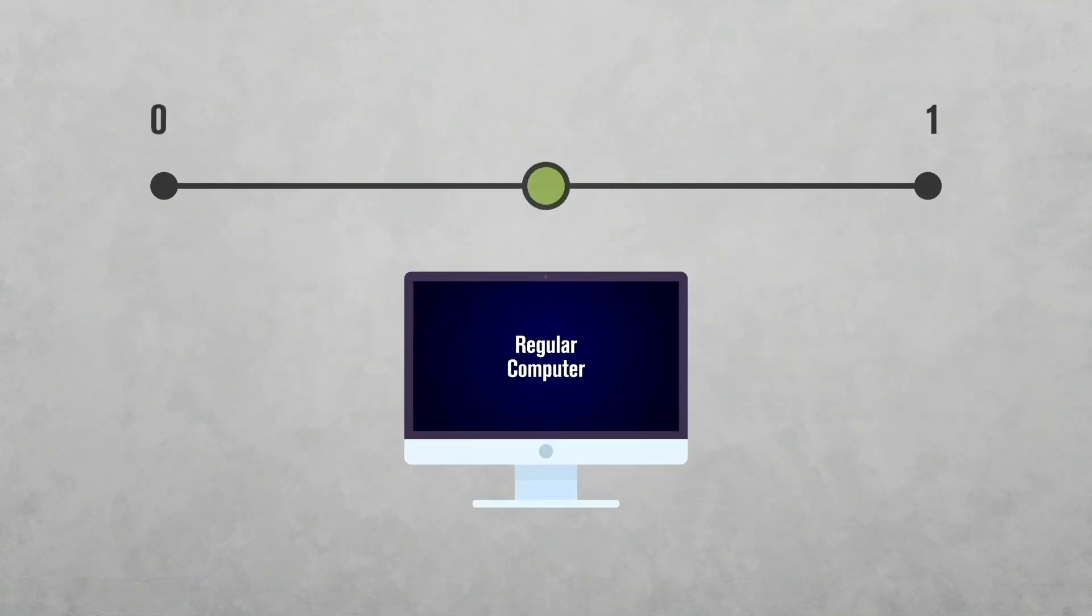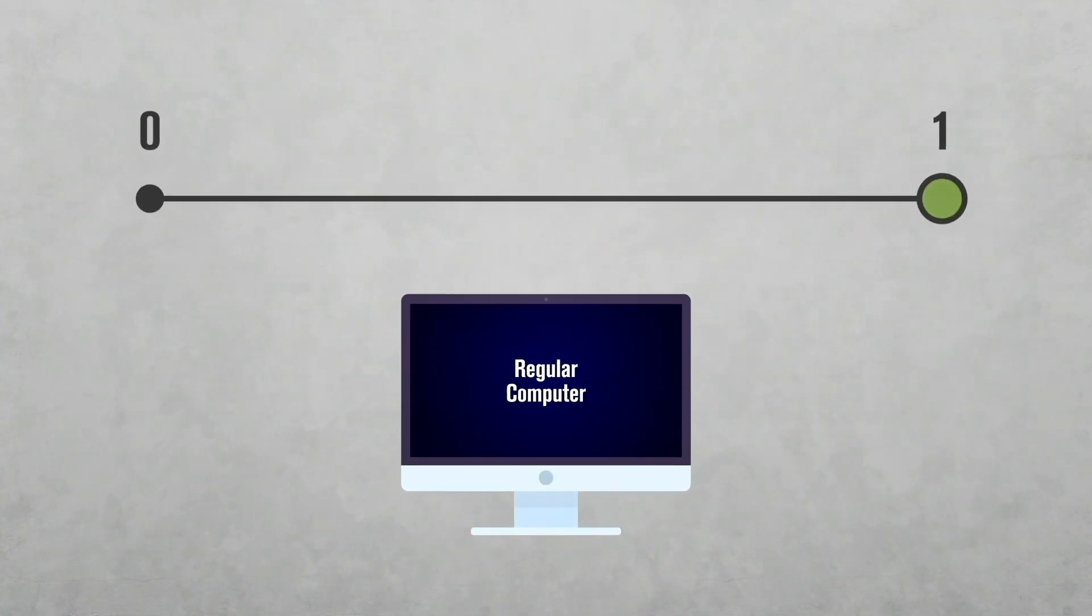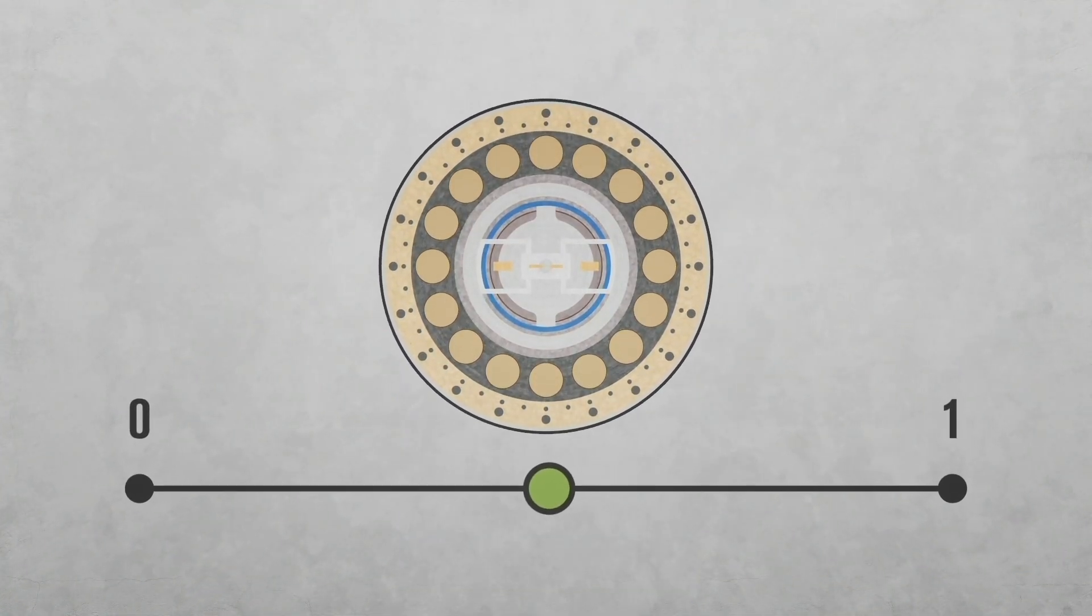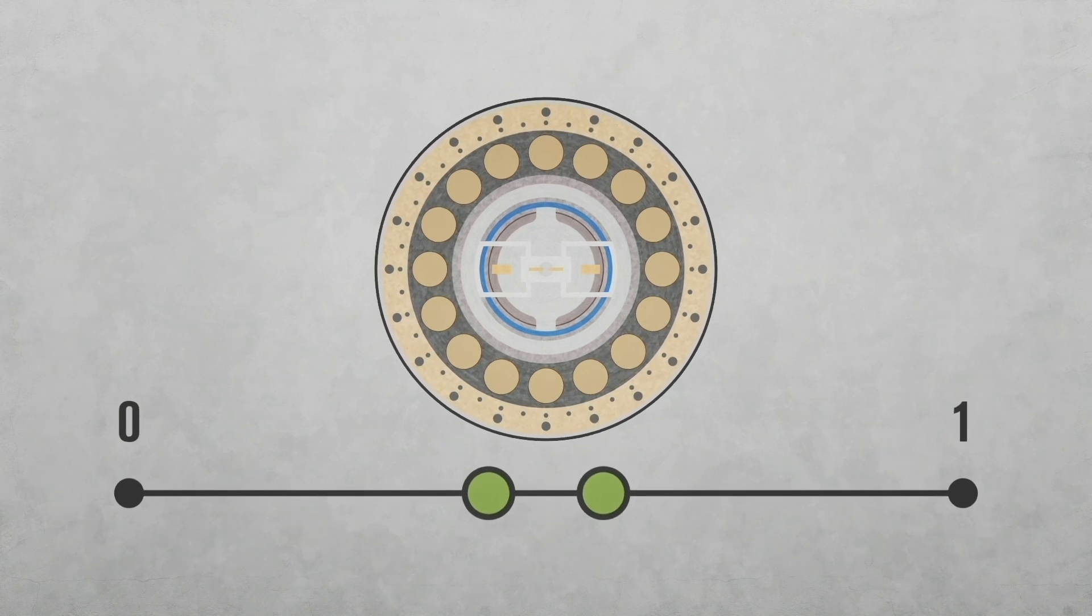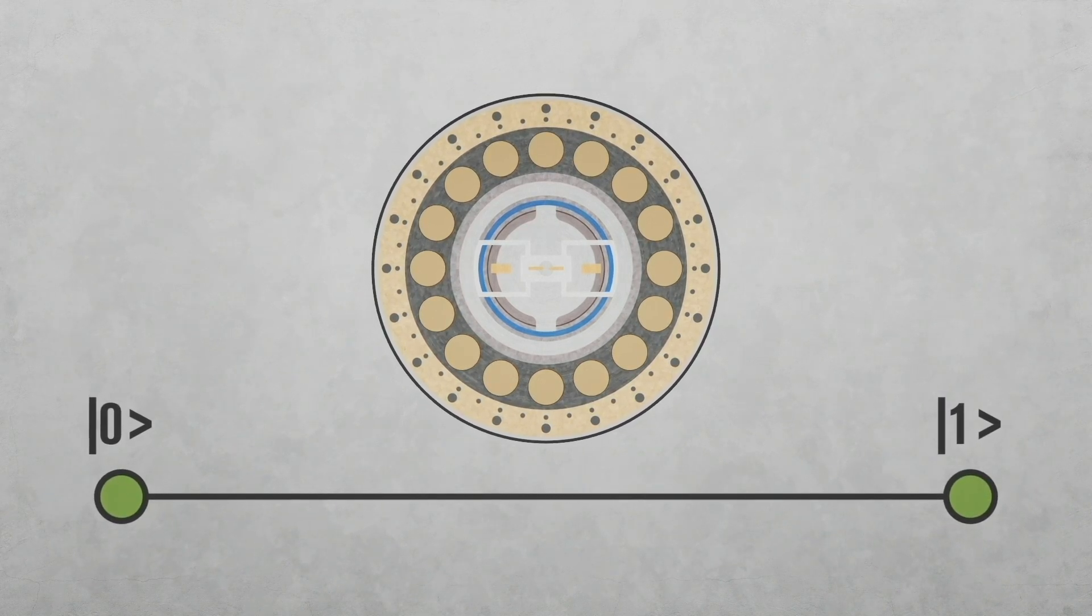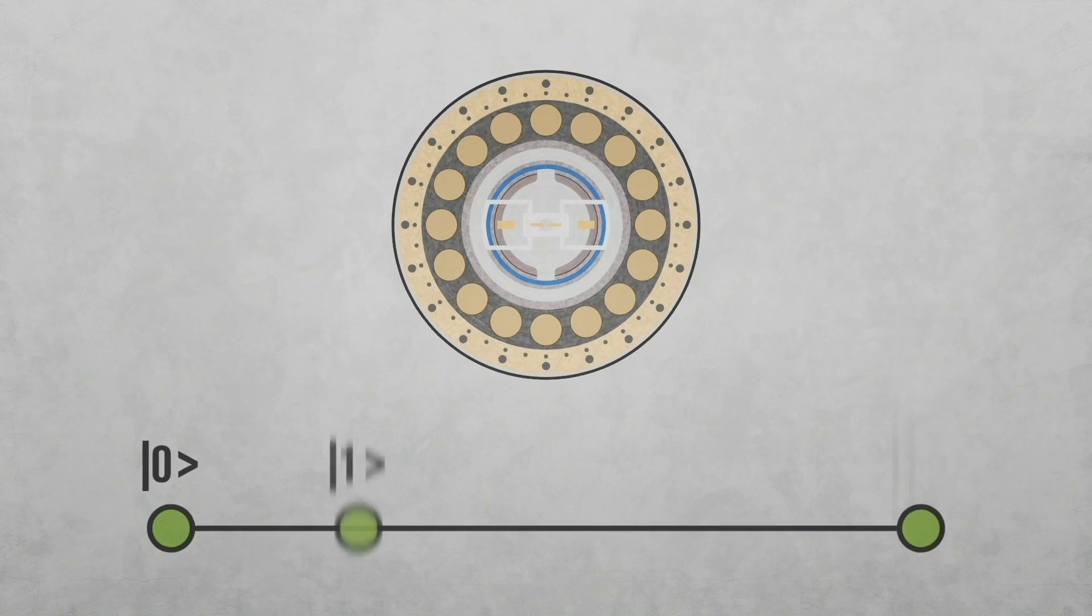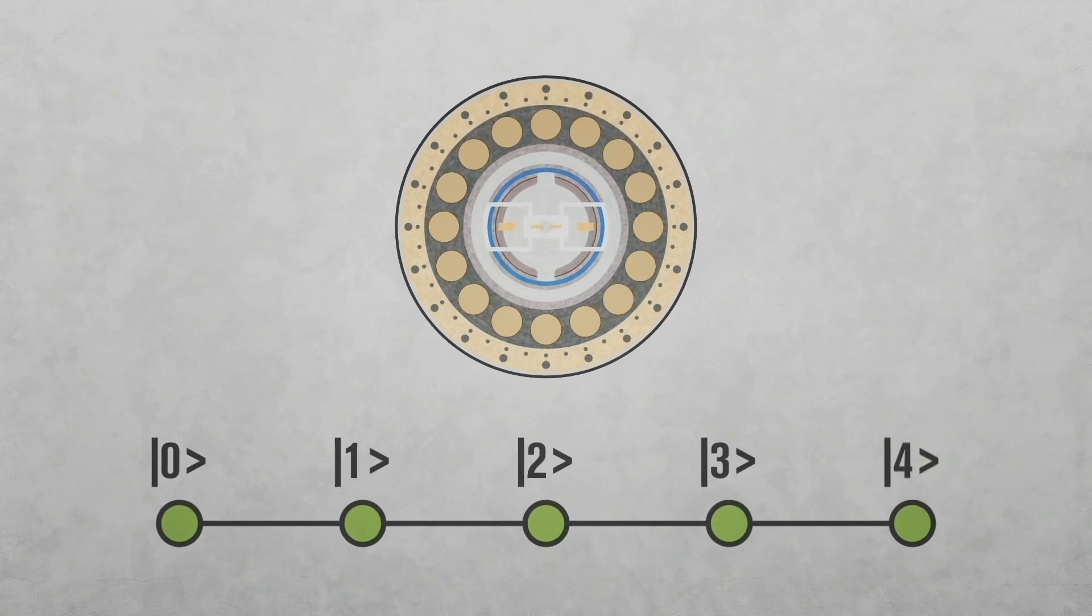Regular computers use bits, zeros and ones. The same is true for most quantum computers, except that the quantum bits can be zero and one at the same time. In fact, quantum systems can be in more than two states.